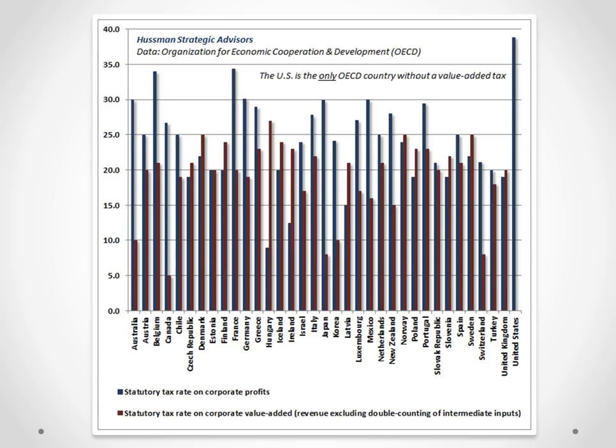One of the claims being made in support of cutting corporate tax rates is that the tax rate on U.S. corporate profits is the highest in the world. What's missing from this argument, though, is that the U.S. is the only country in the OECD that taxes profits but doesn't tax corporate value-added. Corporate value-added — essentially corporate revenues — are a multiple of profits, so by not taxing them at all in the U.S., the taxes paid by U.S. companies are already the lowest in the world.